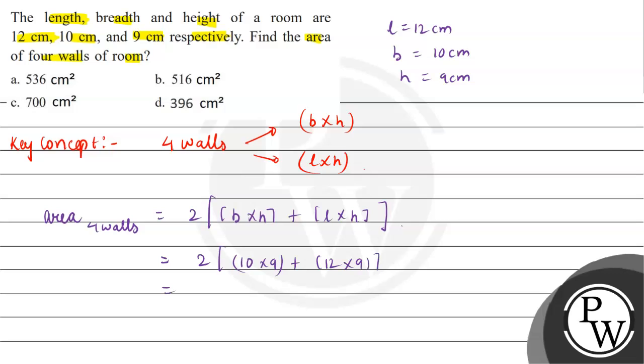This will be equal to twice of 90 plus 108, which equals twice of 198.